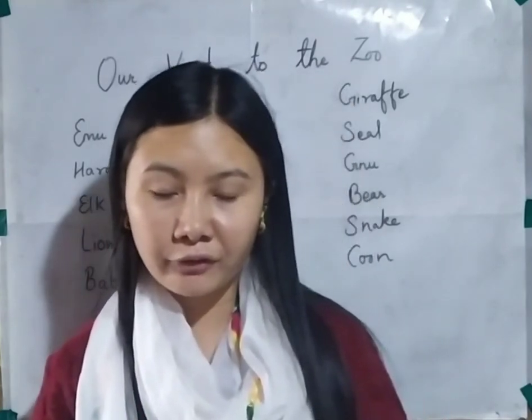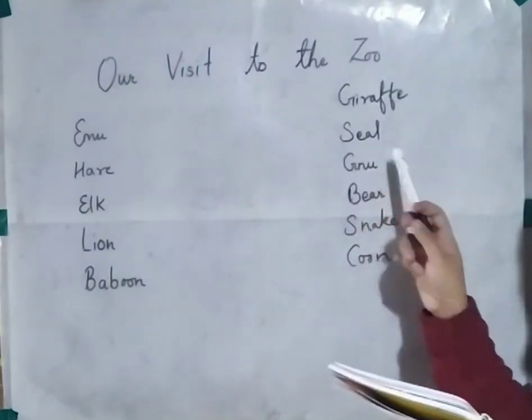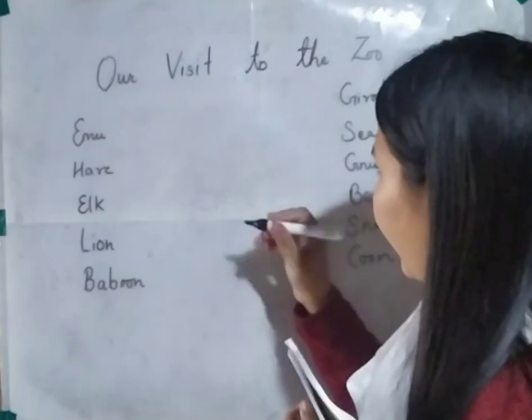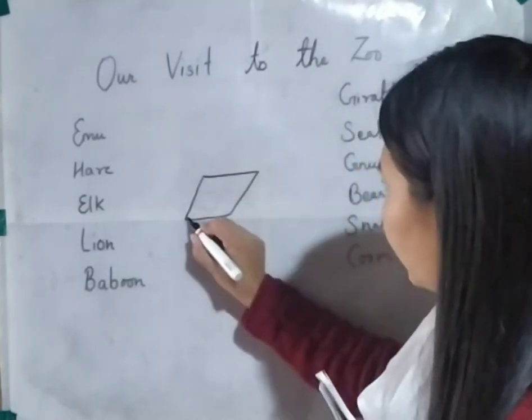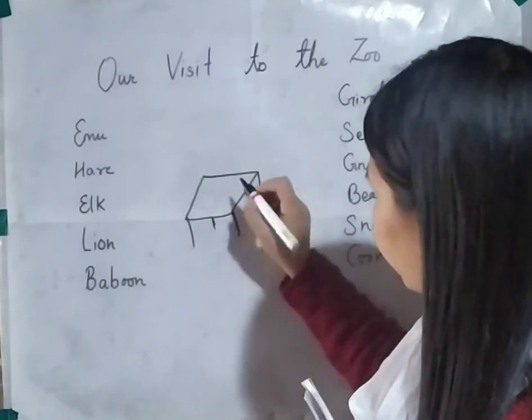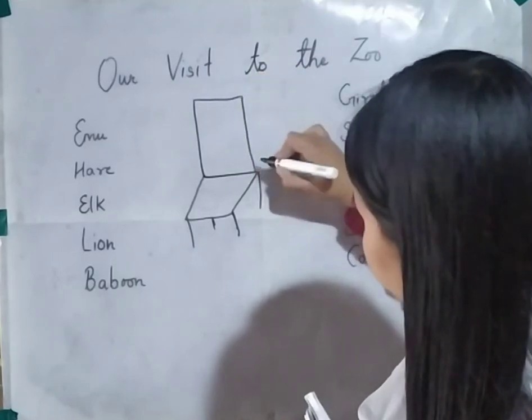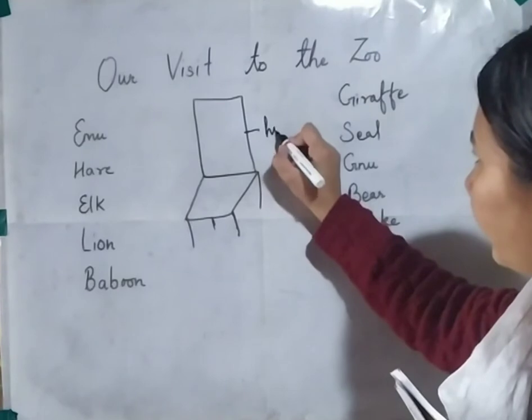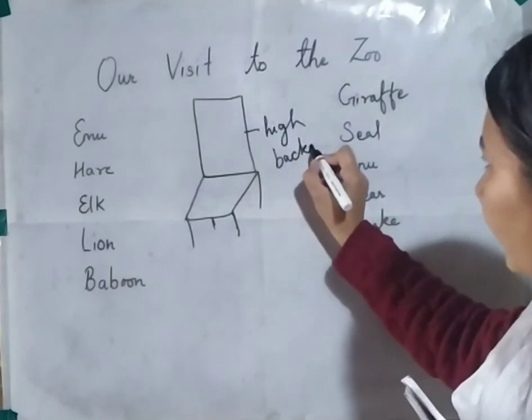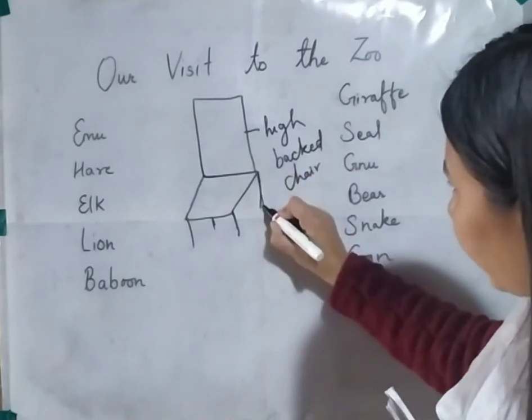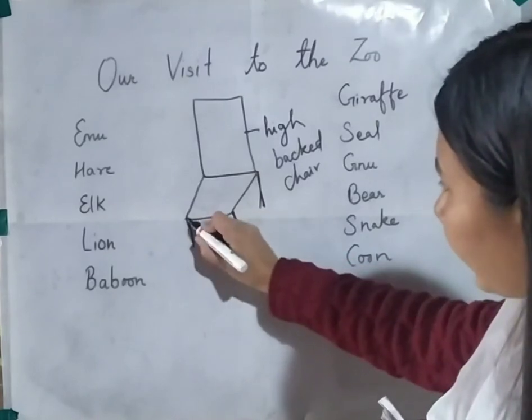And they saw a seal have a meal. The picture of seal is below giraffe on the right hand side. They saw this seal have its meal on a high back chair — that is, a chair with a high back. They also saw the seal eating its meal. Meal means food.